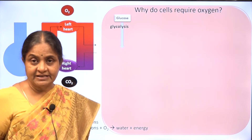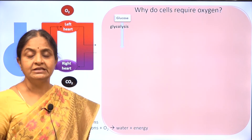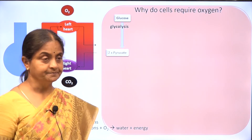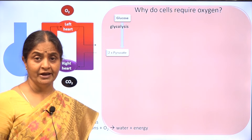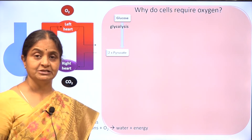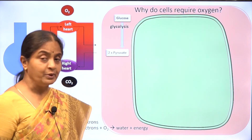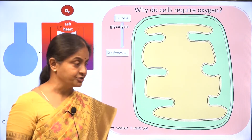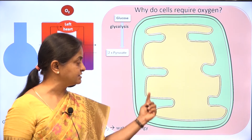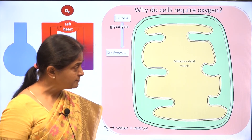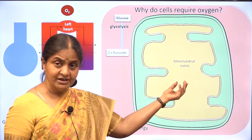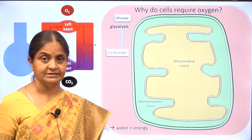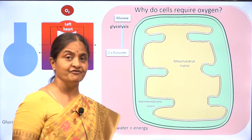Now, these are the major steps. Glucose undergoes a series of reactions termed glycolysis, where pyruvate is the end product. There is no oxygen required here, and this happens in the cytoplasm of cells. Pyruvate then enters the mitochondrion. The mitochondrion is a double membranous structure — this is the outer membrane and this is the inner membrane. What you have here is the mitochondrial matrix and this is the intermembrane space; both these are important in the functioning of the mitochondrion.